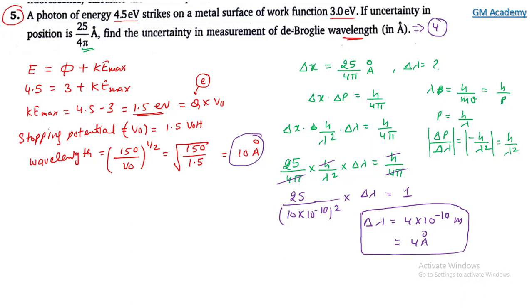Note that since Δx = 25/(4π) angstrom must be converted to meters as 25/(4π) × 10⁻¹⁰ m, this gives Δλ = 4 × 10⁻¹⁰ meter, confirming the answer of 4 angstrom.